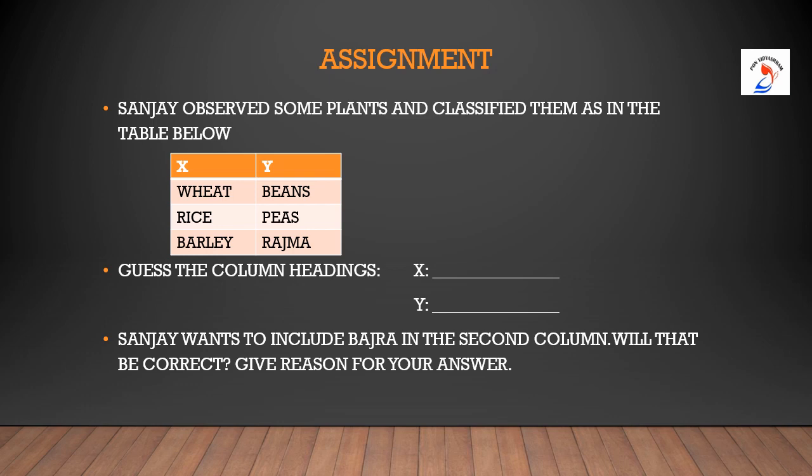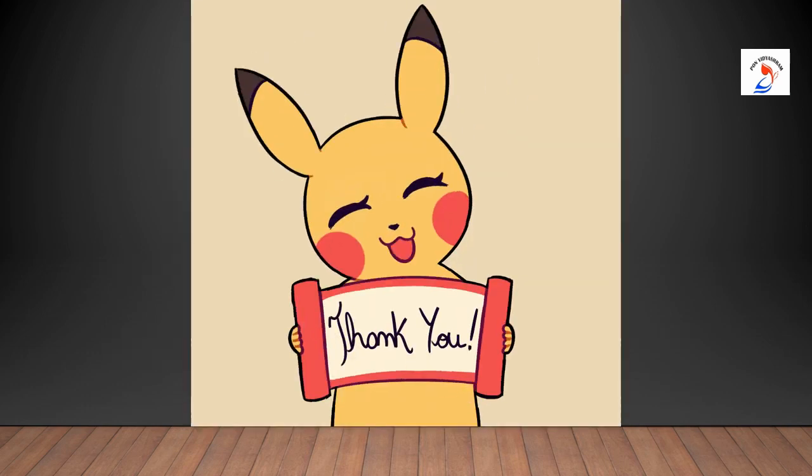Sanjay observed some plants and classified them into a table with two columns X and Y. Under column X: wheat, rice and barley. Guess the column headings X and Y. Then Sanjay wants to include bajra in the second column — will that be correct? Give a reason for your answer. With this assignment we end this module. Thank you children.